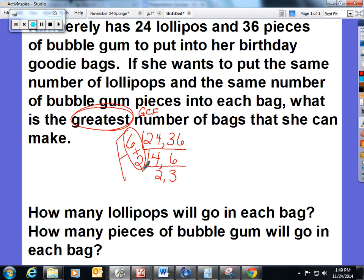That's going to give me 12. Kimberly can make 12 goodie bags if she wants to put the same number of lollipops and bubblegum pieces into each bag. The follow-up question is a great one: how many lollipops will go in each bag? How many pieces of bubblegum will go in each bag? That's when you look at the top of your ladder - 24 was lollipops, 36 was bubblegum pieces.